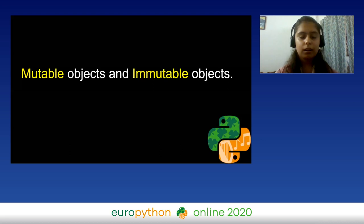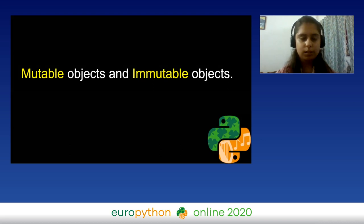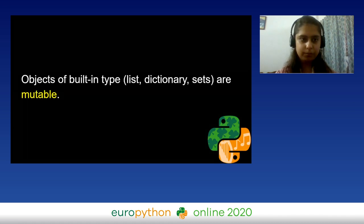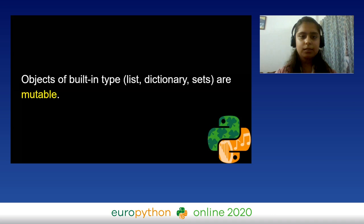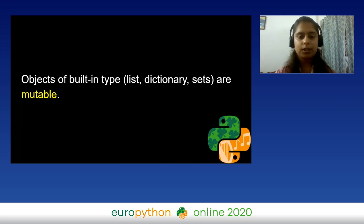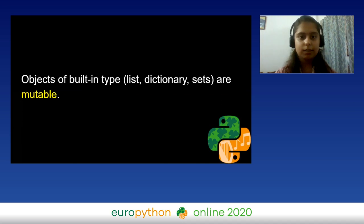Moving ahead, there are two types of objects in Python: mutable objects and immutable objects. Objects of built-in types list, dictionary, and sets are mutable. Mutable objects are objects which can be changed, and the memory address of these objects remains the same — no new object gets created when changes are made.